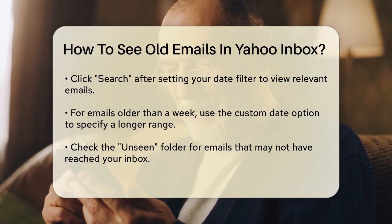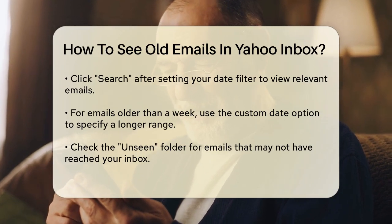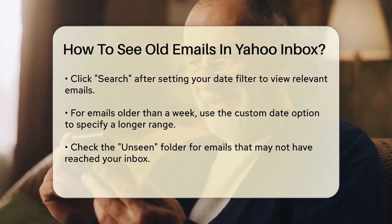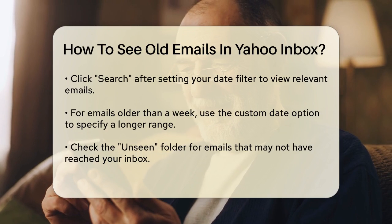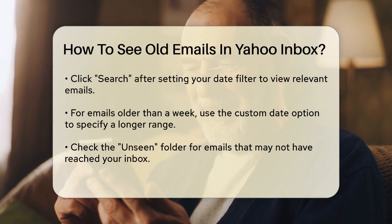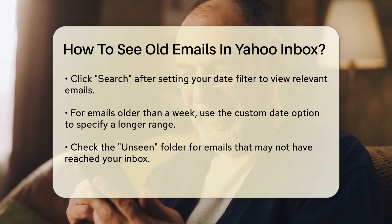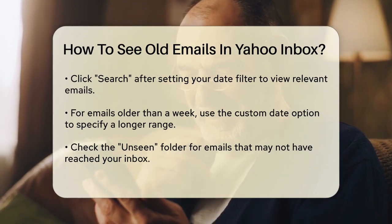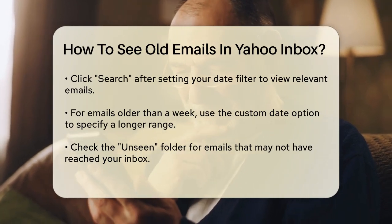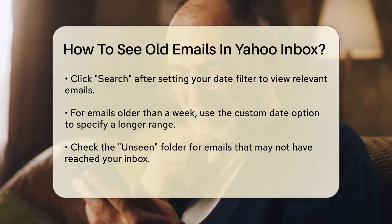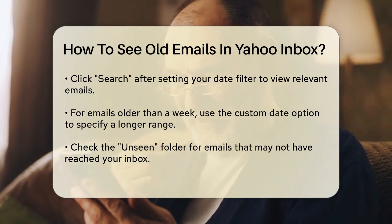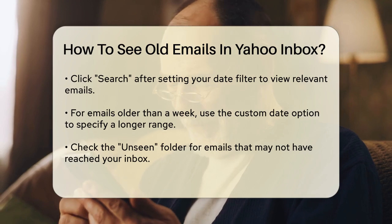If you're looking for emails older than a week, you can use the custom date option. For example, if you want to see emails from the past year, select custom dates and choose a date range that covers the past 12 months.